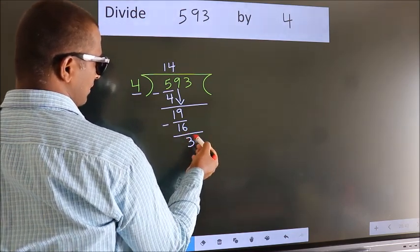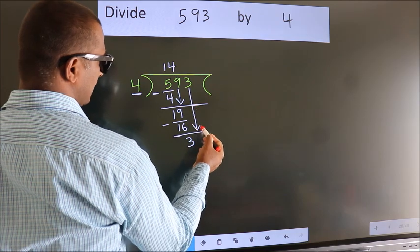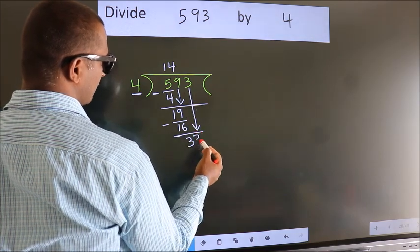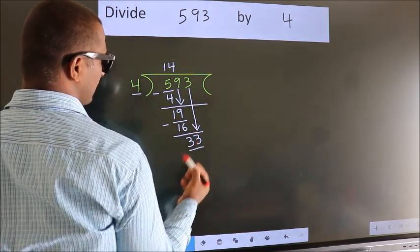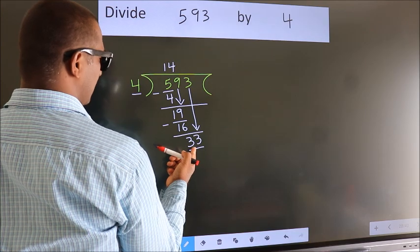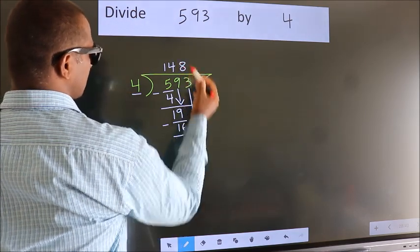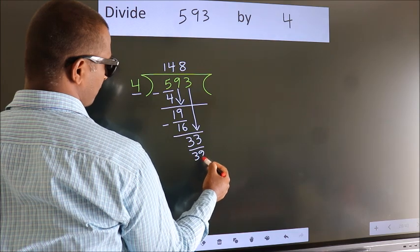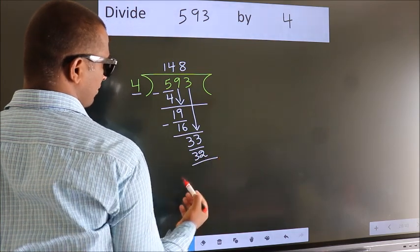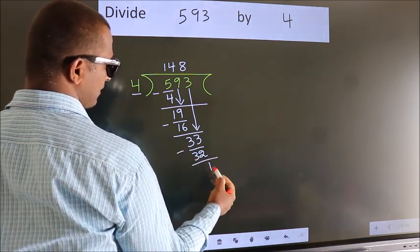After this, bring down the beside number. So 3 down, so 33. A number close to 33 in the 4 table is 4 times 8, 32. Now we subtract. We get 1.